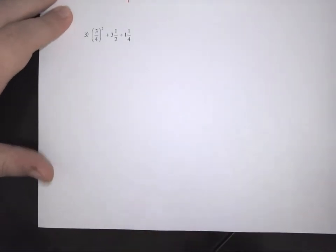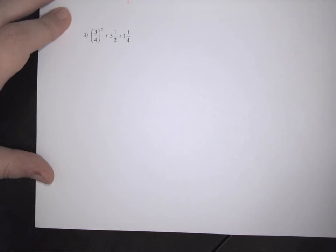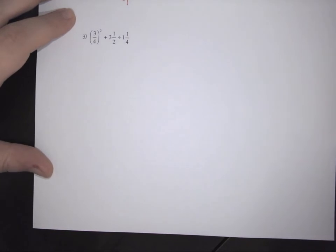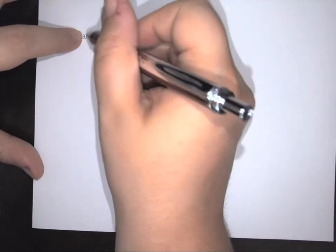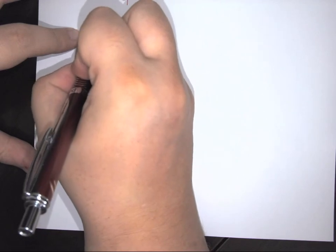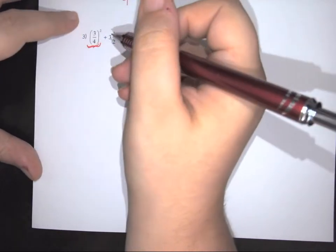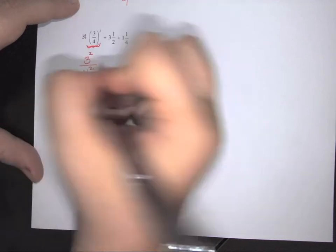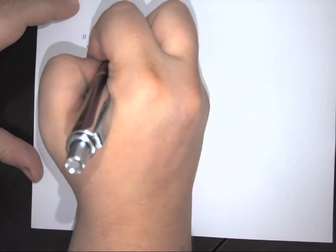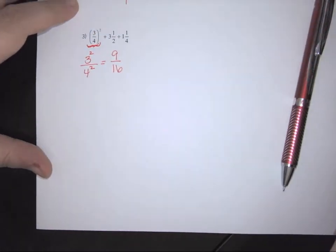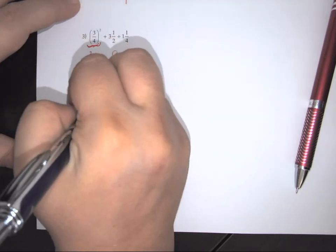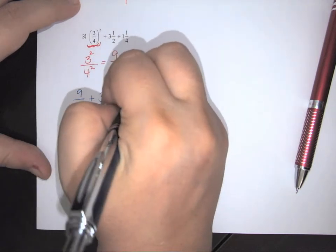Let's look at another one. I ask myself: parentheses, exponents, multiplication, division, addition, subtraction — starting left to right. In this case, I have an exponent with a parentheses, but there's nothing to do inside it except apply the exponent. So I start here and apply it to top and bottom: this is the same as 3 squared over 4 squared, which becomes 9 over 16. I rewrite my problem: 9 over 16 plus 3 and 1/2 divided by 1 and 1/4.